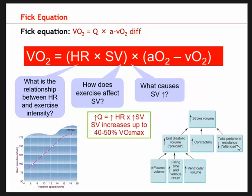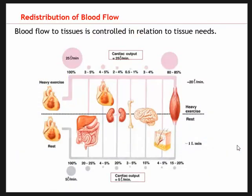Let's move on to redistribution of blood flow. This shows blood flow to tissues during exercise and during rest, based on how much oxygen each tissue needs. At rest, cardiac output is five liters per minute. Internal organs receive 20 to 25%, the heart about 4-5%, kidneys about 20%, bone a tiny proportion, brain about 15%. Our muscles receive about 15 to 20% of total cardiac output at rest.